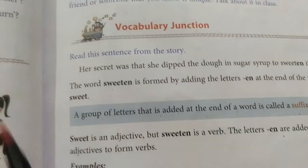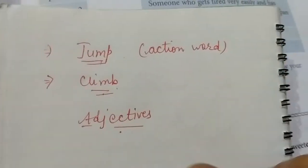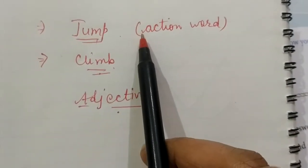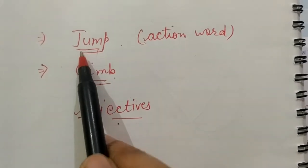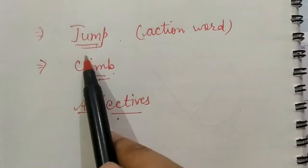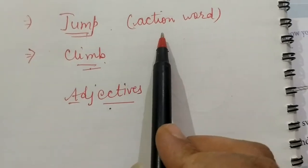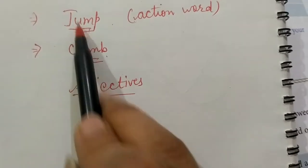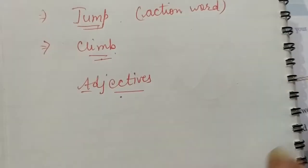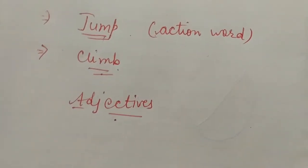You all know what are verbs. Verbs are words that show an action, that tell an action. Like 'jump' is an action word because you can jump. 'Climb' is again an action word because you can climb. So you can perform these actions, that's why these are action words — and action words are also called verbs.